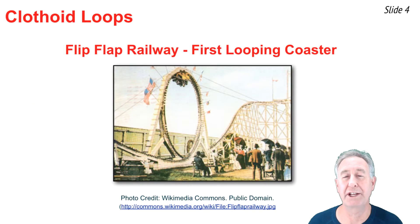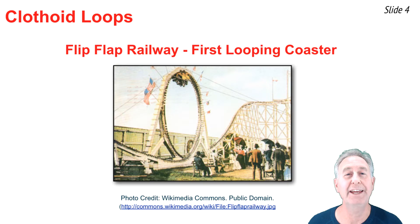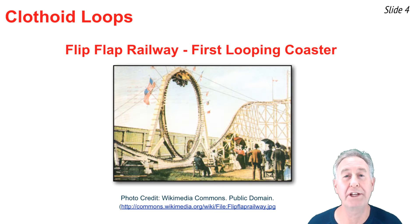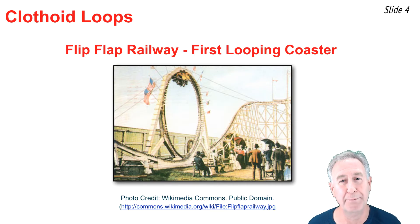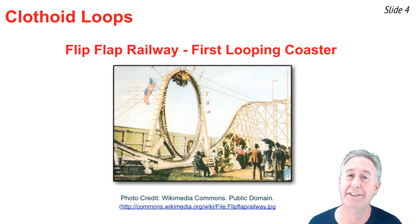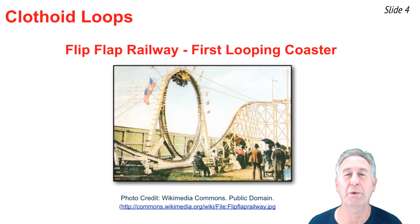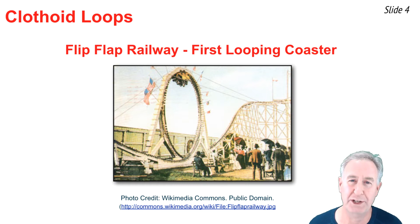One of the first looping coaster rides was at an amusement park in Coney Island, New York. It included a circular loop. Before the ride opened, engineers would test the loops with test dummies inside the cars to make sure they would not fall out when upside down at the top of the loop. But once the ride opened, they found out that the real hazard was not at the top of the loop, but rather at the bottom of the loop where riders would commonly black out or experience whiplash injuries.